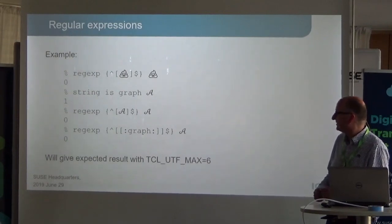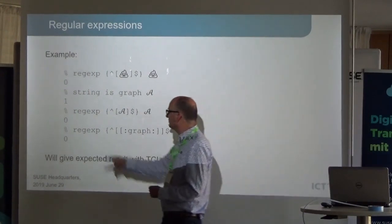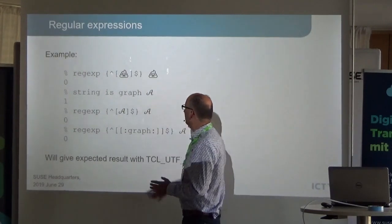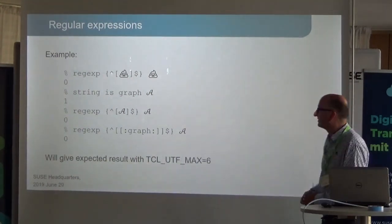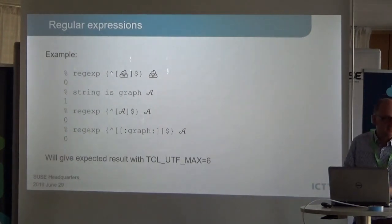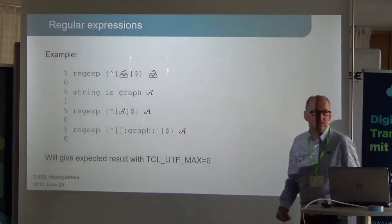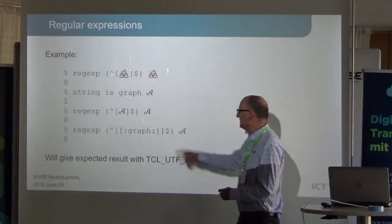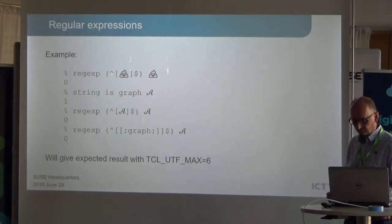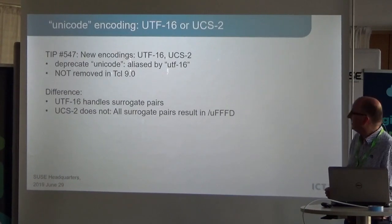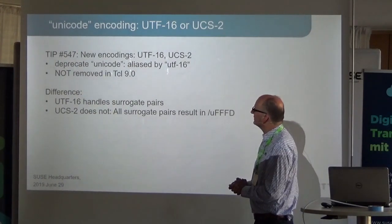Some examples of things that go wrong in 8.7: for example with regular expressions, if you check whether a string is a pile of poo and nothing else, you would expect it to return 1, but it doesn't in 8.7. There's also the mathematical 'A', which is above 65,000 — similar issues apply.